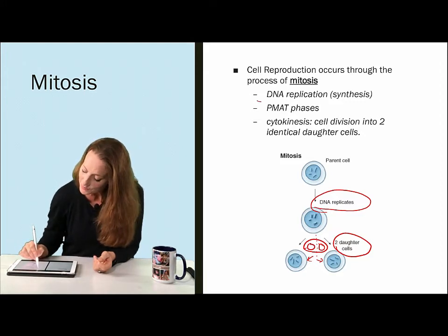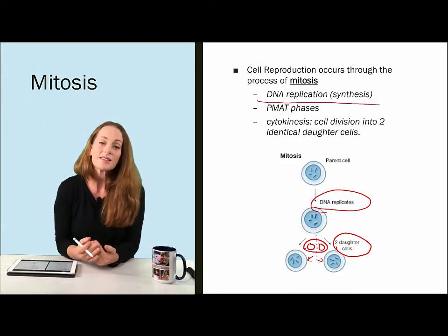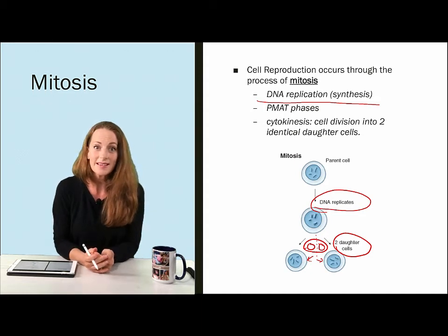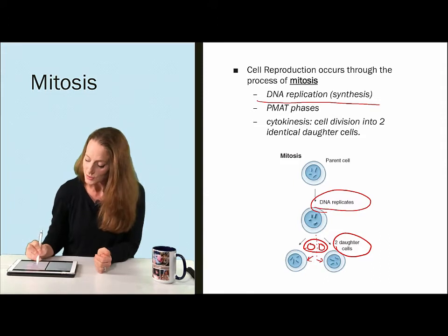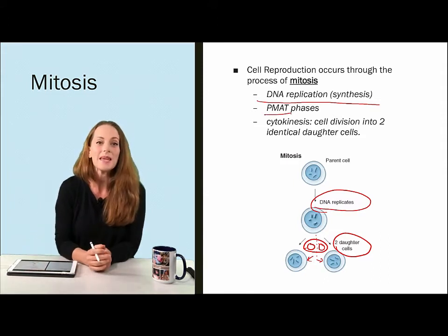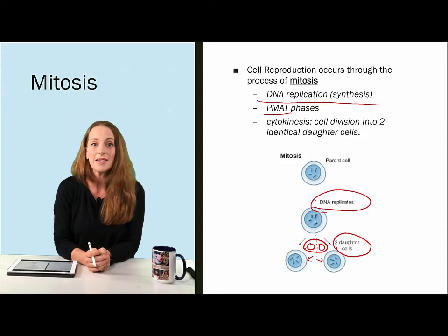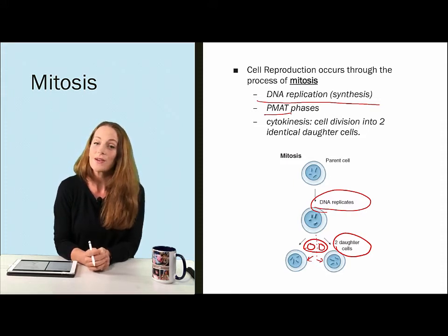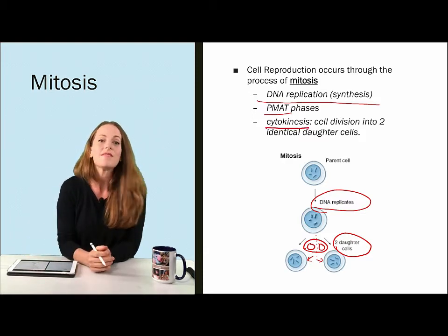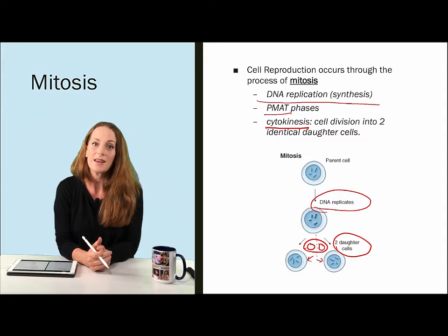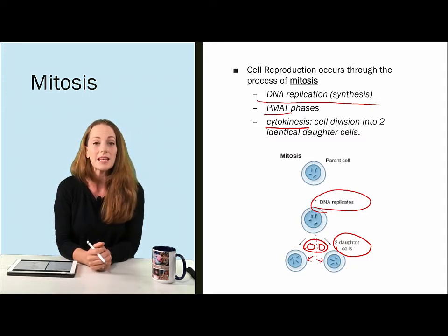The process of mitosis to prepare for it starts with DNA synthesis. Then there are four phases of mitosis, which we abbreviate as PMAT: prophase, metaphase, anaphase, and telophase. It ends with dividing that cell through the process of cytokinesis, which is splitting the cell into two identical daughter cells.